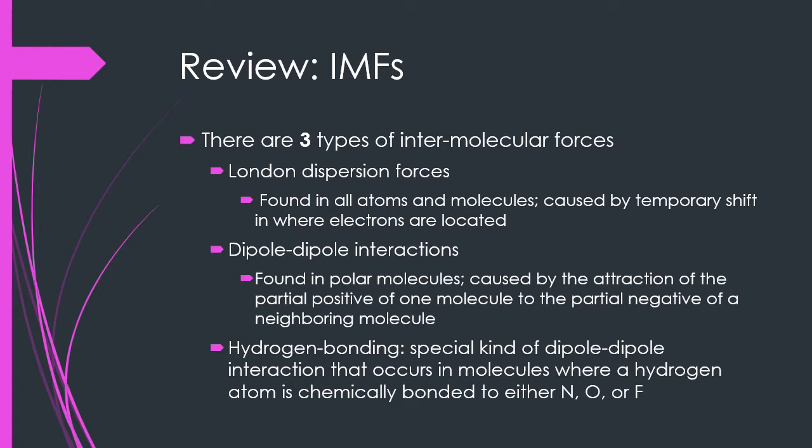London dispersion forces are due to a temporary shift in where electrons are located, due to the random nature by which electrons move, therefore temporarily creating a dipole — an area that appears partially negative and one that appears partially positive.